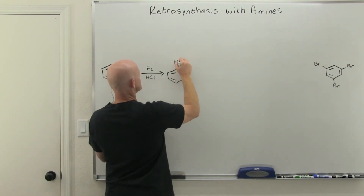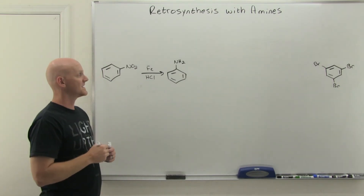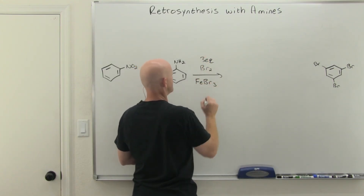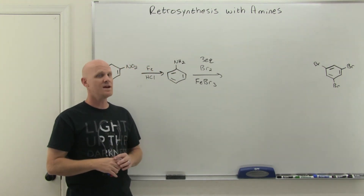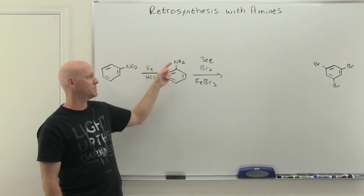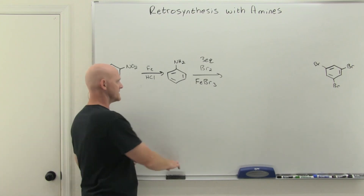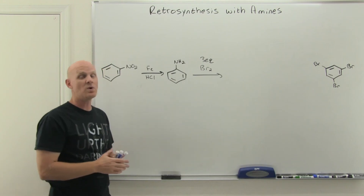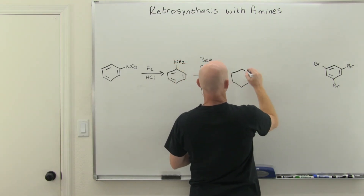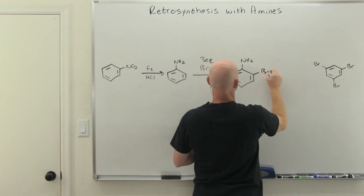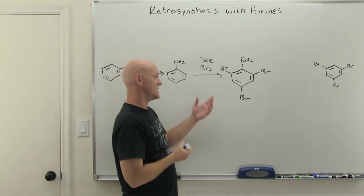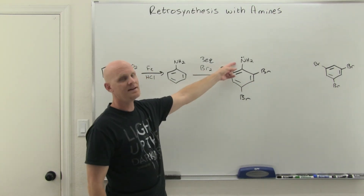Redrawing with the NH2 at the top, we add three equivalents of Br2/FeBr3 for EAS bromination. One important note: with an amine, an acid catalyst would protonate the nitrogen, turning the electron-donating group into an electron-withdrawing meta director — and we don't want that. So we leave out the catalyst; the amine is such a strong activator we don't need it. Three equivalents of Br2 fill all the ortho and para positions relative to the amine.